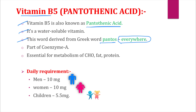Vitamin B5 is found in minute quantities in almost all foods. It is also part of Coenzyme A — very important in biochemistry — and is essential for the metabolism of carbohydrates, fats, and proteins.